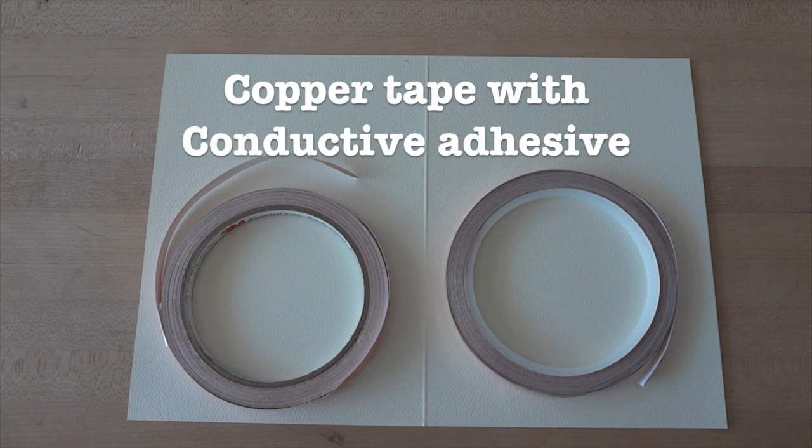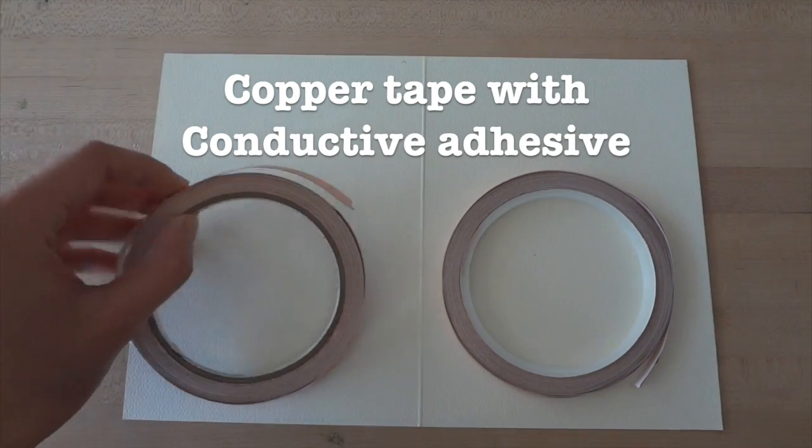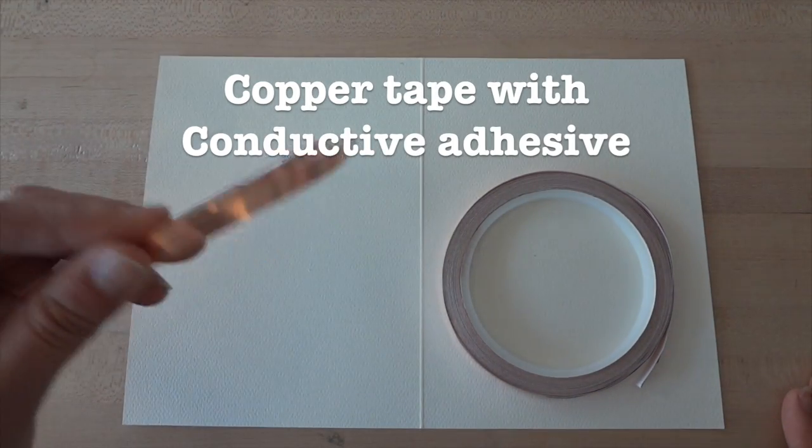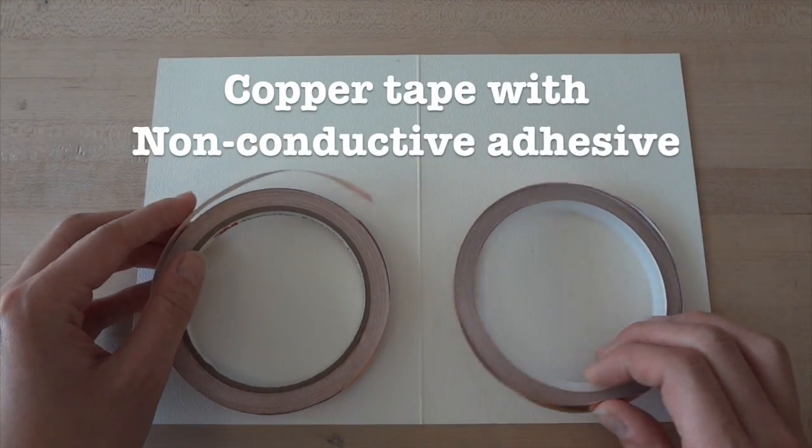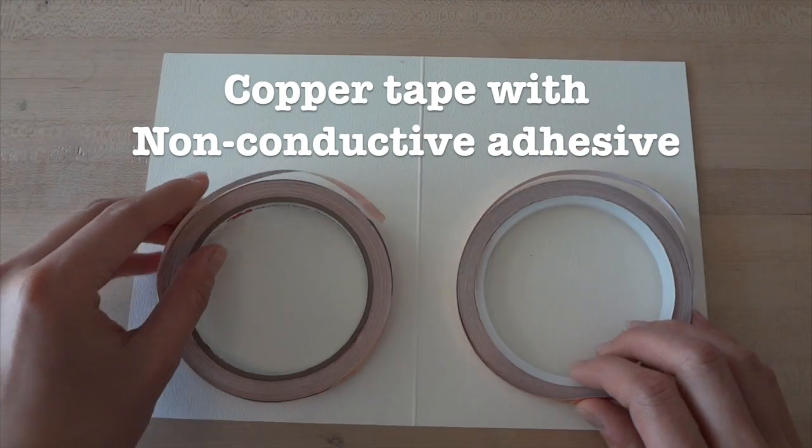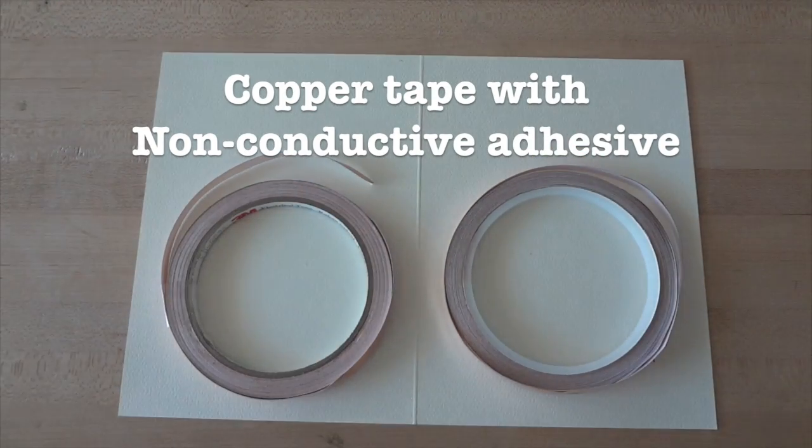There are two main types of copper tapes. One has conductive adhesive; this type you can order online. The other has regular non-conductive adhesive. This sort of tape is more common and can be found at your local hardware store.